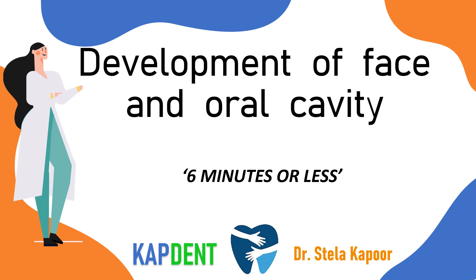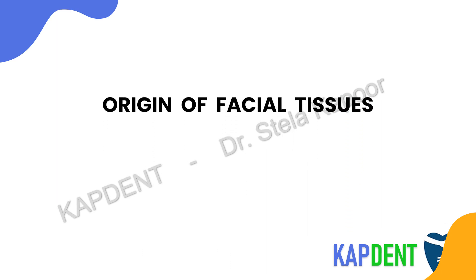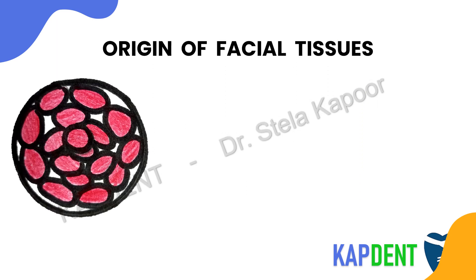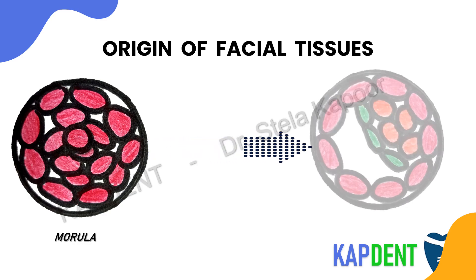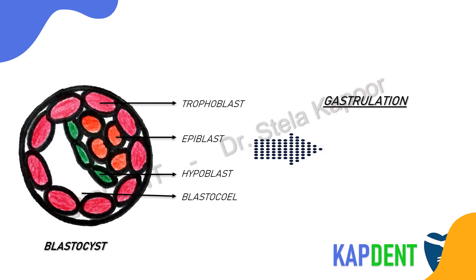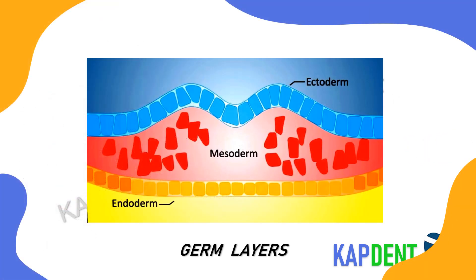Before going directly into the development, let us start all the way back when the fertilized egg undergoes multiple cell divisions to form morula, which then organizes to form blastocyst. This structure undergoes the process of gastrulation to give rise to our three germ layers — namely ectoderm, mesoderm, and endoderm — by the end of the third week of intrauterine life.